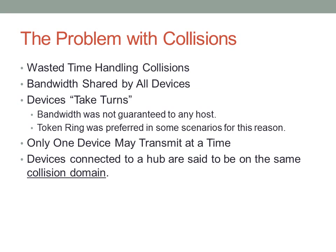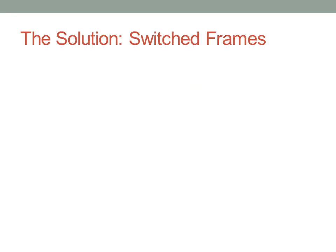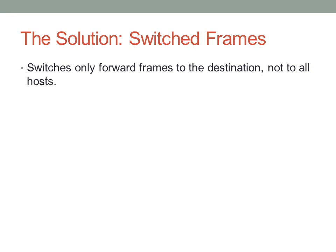The solution to all of these problems with collisions is switching. The idea behind the switch is that rather than repeating the same signal to all devices, we actually inspect a frame and switch it to the correct port accordingly. Switches only forward frames to the destination, not to every single host — unlike a hub, which sends all data to all hosts so that they all share the same physical wire.